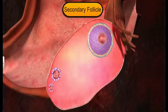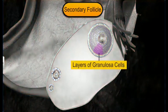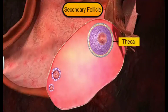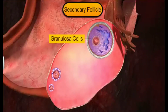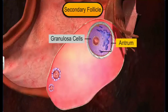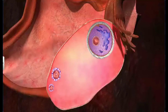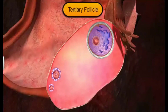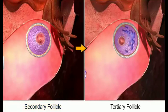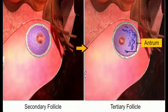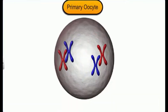Later, the granulosa cells secrete estrogen, which creates the antrum — a fluid-filled cavity among the granulosa cells. The theca becomes evident and gets organized into two layers: the theca interna and the theca externa. This structure is now called the tertiary follicle. As the secondary follicle transforms into a tertiary follicle, the primary oocyte within the follicle completes meiotic division.